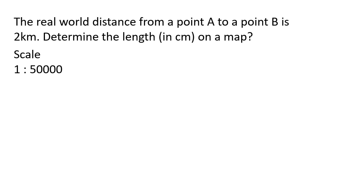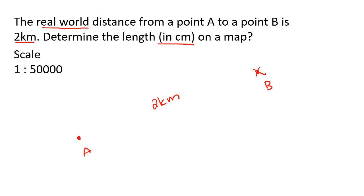They said the real world distance from point A to point B is two kilometers — so that's in real life, from A to B is two kilometers. Determine the length in centimeters on a map. Maybe this is your house and this is your friend's house and it's two kilometers. But now if we put that on the map, they want to know what that distance is going to be in centimeters. The scale given is one to 50,000. This side is always the map, and this side is always the real world.